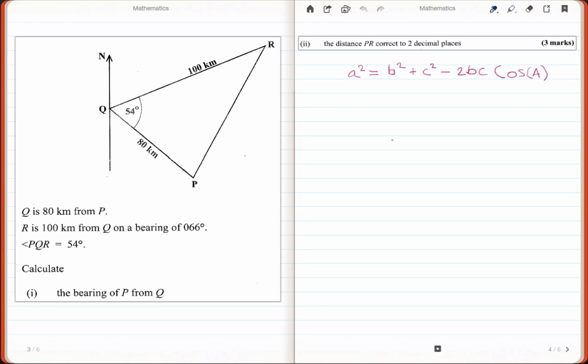So this is P, this is Q, and the angle of P from Q will be the angle that comes all the way around like this. So how are we going to calculate that?